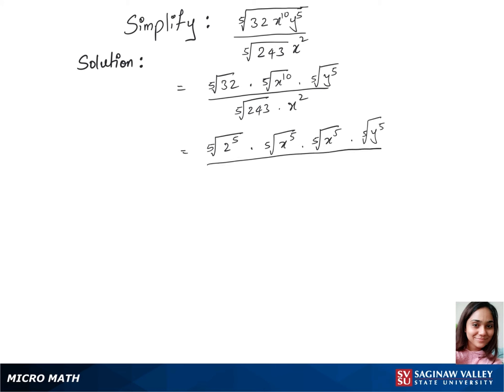Over fifth root of 243, we'll write 243 as 3 power 5 times x square. We'll cancel out fifth root of x power 5 with the terms there. So that's 2 times x times x times y over 3 times x square.